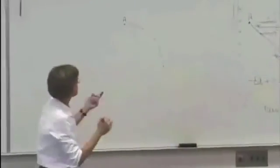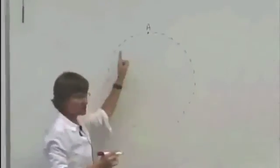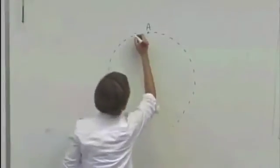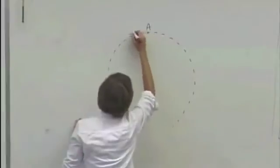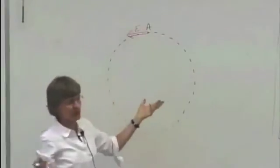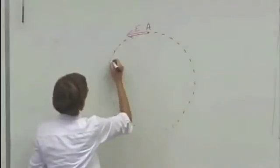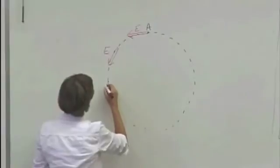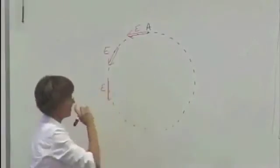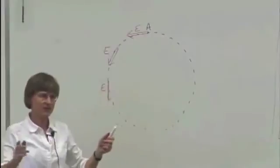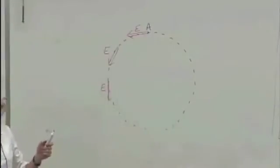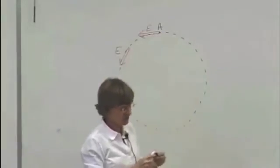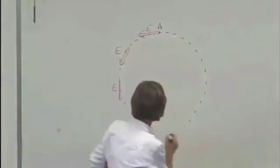Suppose it turns out that we measure the electric field everywhere along this path with our little proton on a spring, and the electric field everywhere ends up being tangent to this path. I can't draw it everywhere, obviously, but at this location it's tangent to the path, and at that location it's tangent to the path. This is a path where we can't take finite steps, so we'd have to take infinitesimal little DLs around here.